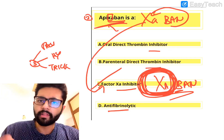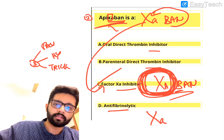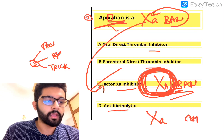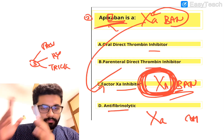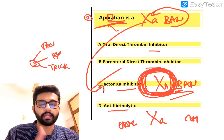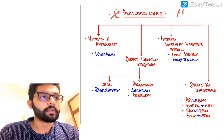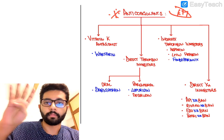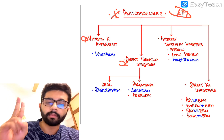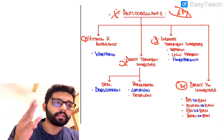Remember: factor XA inhibitors all have XA in their name. In the coagulation cascade, you have an extrinsic and intrinsic pathway and a common pathway. Factor 10A plays a role in the common pathway, and these drugs directly inhibit factor 10A. Now, there are four important classes of anticoagulants: vitamin K antagonists, direct thrombin inhibitors, indirect thrombin inhibitors, and direct factor 10A inhibitors.